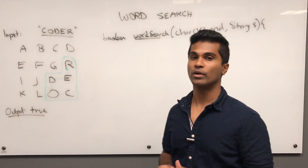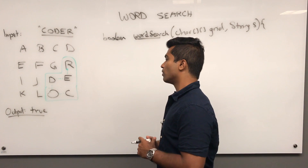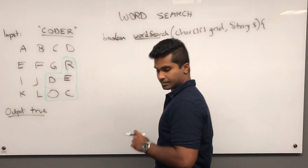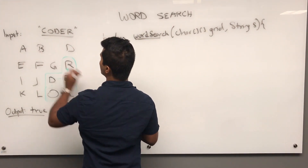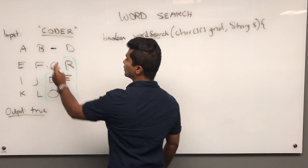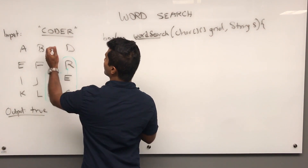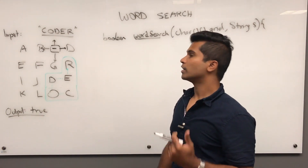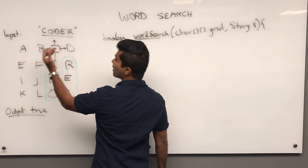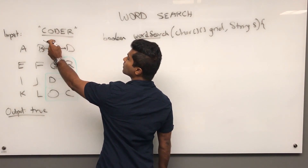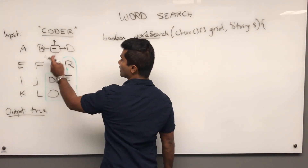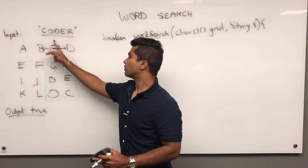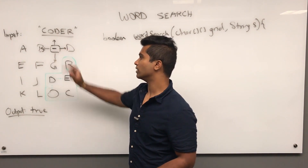How do we track the condition where we're not allowed to reuse the same letter? One approach: every time we're checking a letter and it matches, we replace it temporarily with a hyphen placeholder. For example, when we come to 'C' for the first time, C becomes a hyphen, and then we ask its neighbors — up, down, left, and right — whether they are the next letter. If everything returns false, we can replace the hyphen back with the original character.